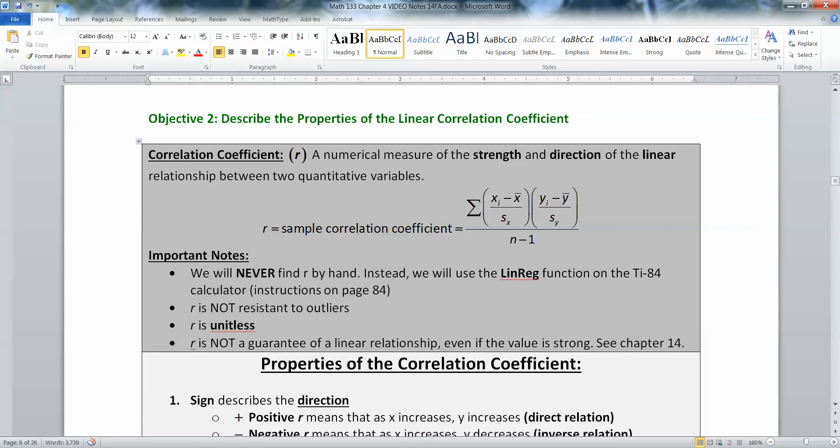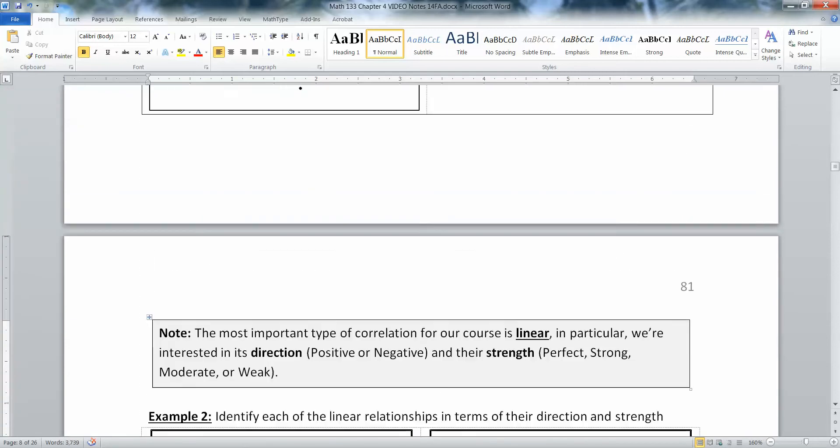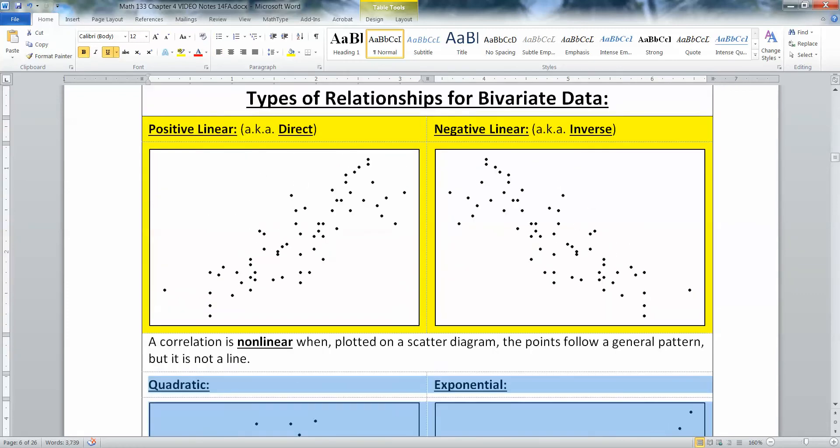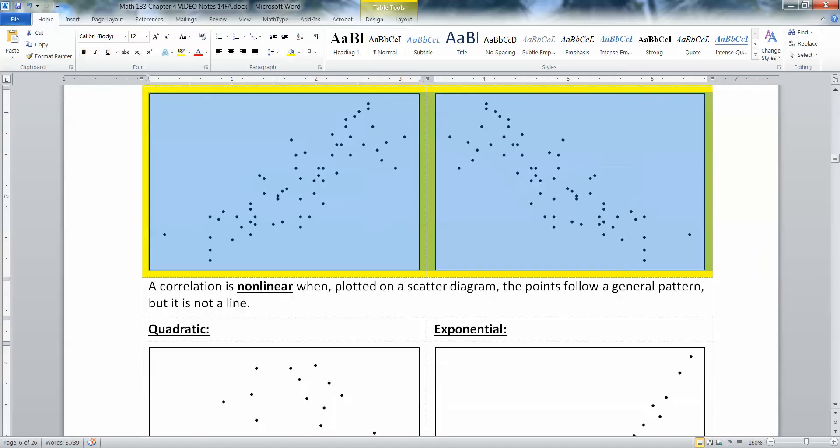The correlation coefficient is abbreviated by the letter R. It's a numerical measure of the strength and direction of the linear relationship between two quantitative variables. Strength means it will give you a gauge of whether it's moderate, strong, weak, or perfect. It will also give you a sense of the direction. If the number is positive, it's a positive relationship; if negative, it's a negative relationship. And it's only dealing with linear relations. It will not work for nonlinear relationships like quadratic or exponential. The only ones that matter to us are positive linear and negative linear.